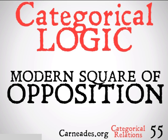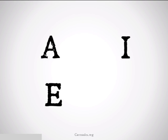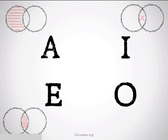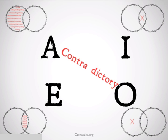We're going to be looking at the traditional version of this in a bit, but for now we're focusing on the modern version. In order to set up our modern square of opposition, we're going to write our four propositions — A, E, I, and O — we're going to set up our Venn diagrams going around, and then we're going to put in the relationships that we learned about.